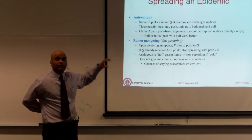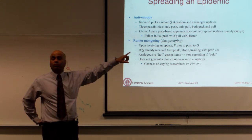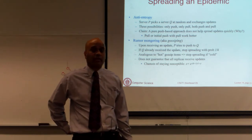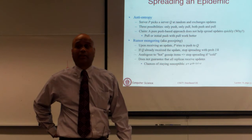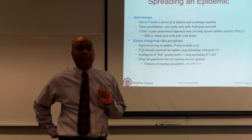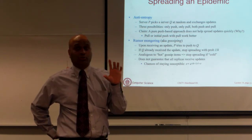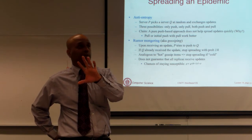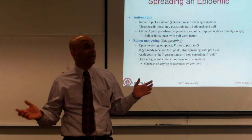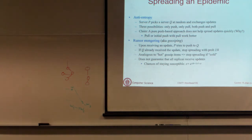With a pure push approach, you start with one node having the update, it randomly picks another node and pushes. Now two nodes have it. Those two nodes each randomly pick other nodes and push. So four nodes have it — the number grows exponentially. In the end, there may be a very small set of servers that still haven't seen that update, because you are randomly picking servers and some may never get chosen.